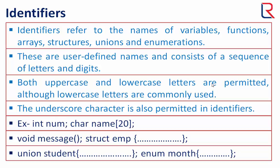Num is a variable which has 2 bytes storage capacity. Name is a character type array variable which has 20 characters space. Message is a function. Functions are the particular segment of a program and have different functionality.